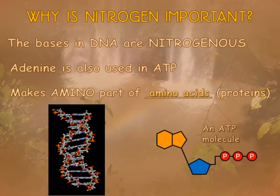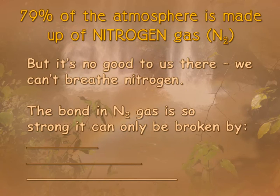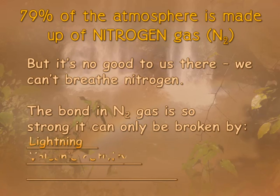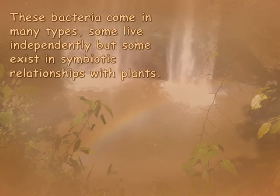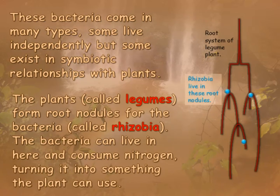A lot of the atmosphere — 78% — is made up of nitrogen gas, but it's no good to us there. The bond in N2 gas is so strong it can be broken by lightning, volcanic activity, and also a few special bacteria. Those bacteria come in many types: some live independently, but others exist in a symbiotic relationship with plants called legumes. In the root nodules of these plants, bacteria called rhizobia live and convert nitrogen from the air into something the plant can use.